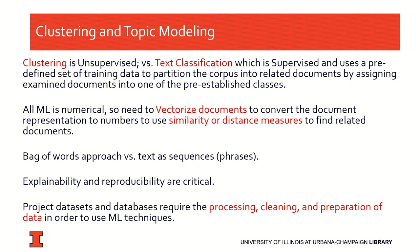You're doing vectorization in order to use similarity or distance measures to find related documents. In the work we're doing, we're using the cosine function, but there's also a dot matrix function, a linear algebra function, and Euclidean distance that's sometimes used. Most clustering uses a bag-of-words approach versus text as phrases, and we'll talk about that later. Explainability and reproducibility are critical in all ML projects. An important point is that a lot of time in projects is spent on processing, cleaning, and preparation of data — that's integral to any successful project.